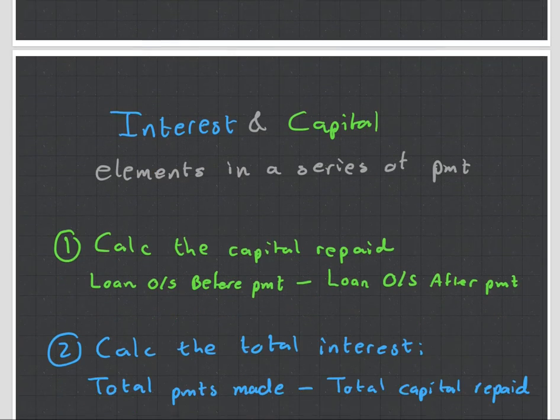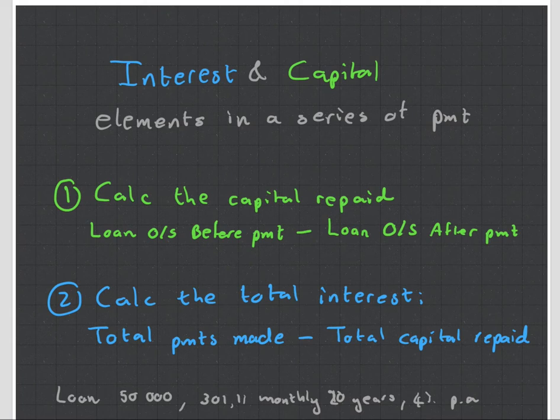If you want to calculate the interest and capital elements on a series of payments, then what you can do to get the capital is you calculate the capital repaid by using the following formula. The loan outstanding before the payment minus the loan outstanding after the payment.